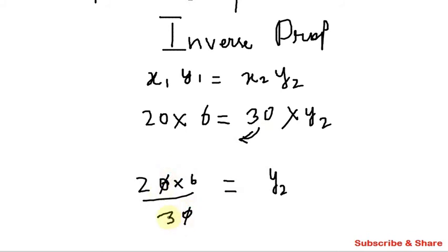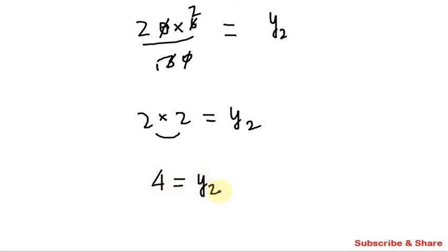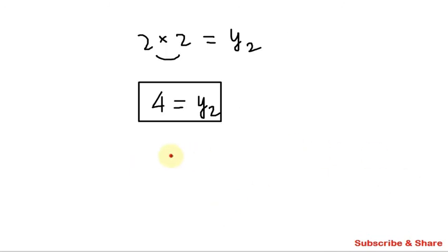1 times 3 is 3, 2 times 3 is 6. So y2 value is 2 into 2, which is equal to 4. So 2 into 2 multiply equals 4. So y2 is equal to 4. Now 10 animals are extra, so the food lasts for 4 days. So y2 is equal to 4, the food will last for 4 days.